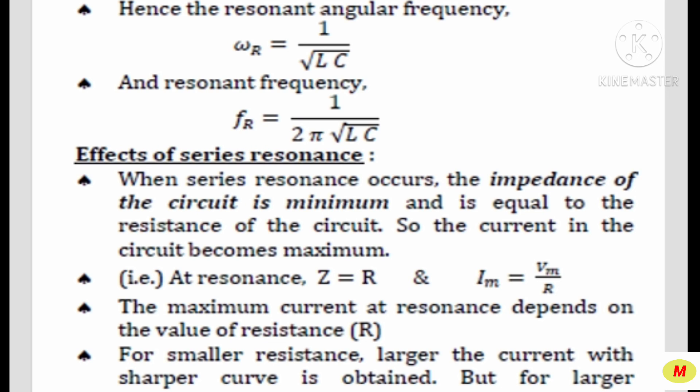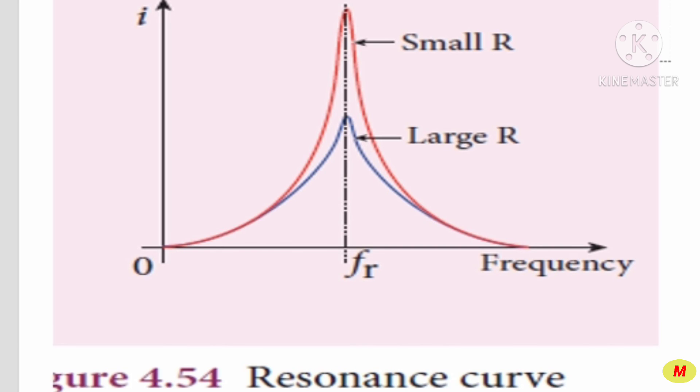Next are the effects of series resonance. When series resonance occurs, the impedance of the circuit is minimum — equal to the resistance R — so the current in the circuit becomes maximum. At resonance, Z = R and Im = Vm/R. The maximum current at resonance depends on the value of resistance R. For smaller resistance, a larger current with a sharper curve is obtained; for larger resistance, a smaller current with a flat curve is obtained, as shown in the figure. Thank you students — write your doubts in the comment box.